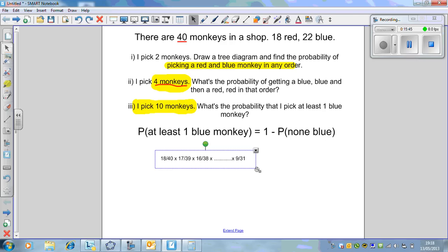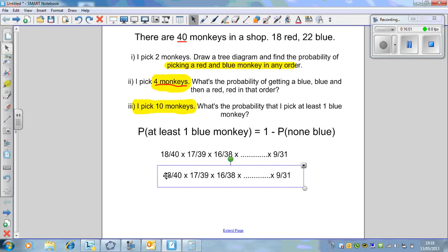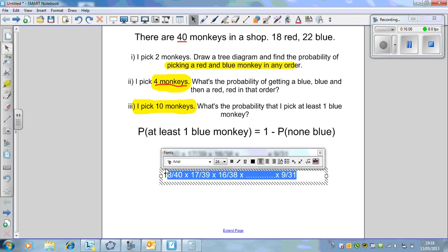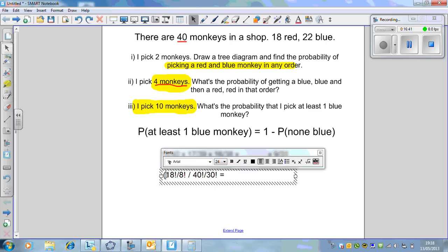It's multiplying all those probabilities. Notice the denominators go down and the numerators go down. That is long, you've got 10 different fractions to write up. I'm going to be a bit sneaky. This demonstrates the power of a factorial function. I could write the numerators as 18 factorial divided by 8 factorial. I need to divide that by the denominator, 40 factorial divided by 30 factorial.